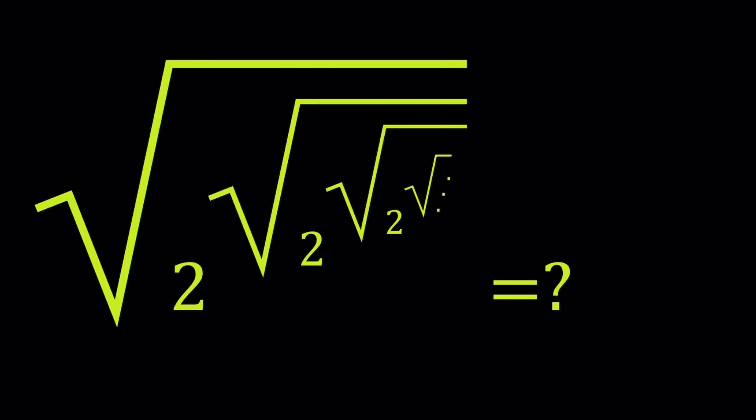Hello everyone. In this video, we're going to be dealing with an infinite radical expression. It's not only infinitely radical, but it's also exponential in some sense. This is kind of an abuse of notation and there are a lot of things we need to talk about — does this converge, and so on. We're going to use inequalities, talk about limits, and arrive at something meaningful and legitimate.